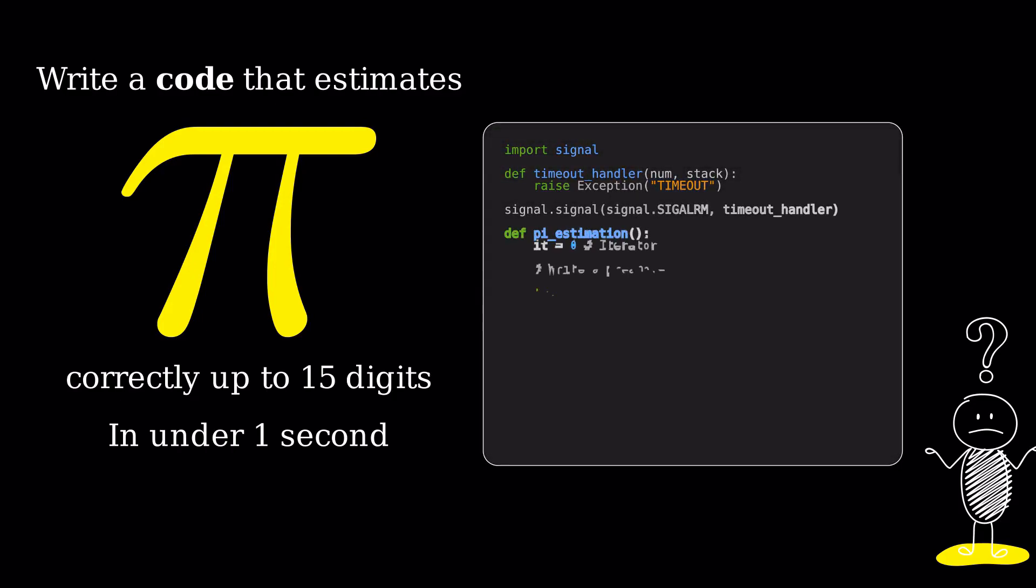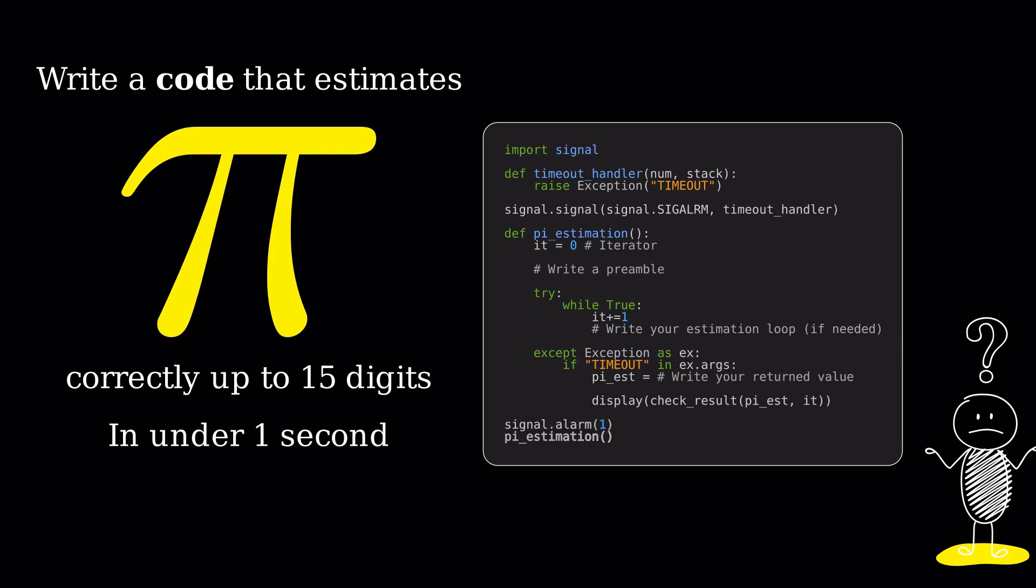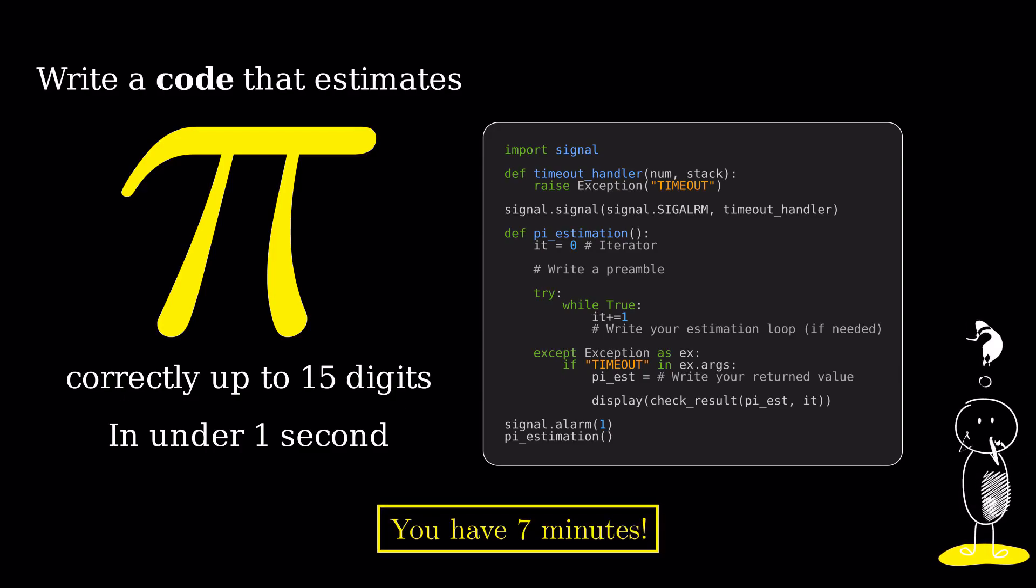There are a few golden standards for checking the accuracy of the estimates, one of which is slower algorithms for computing pi that you also wrote.